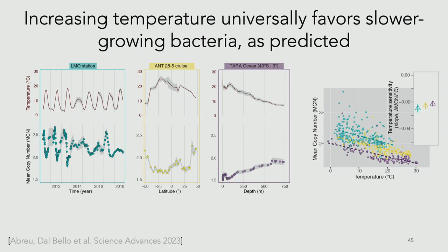Visualizing it another way, mean copy number decreases with temperature, consistent with our previous experiments. The slope of this temperature relationship is remarkably consistent across datasets — almost disturbingly so for real data. The intercepts of these lines are different, though, meaning mean copy number is not just a function of temperature — different environments like the Baltic Sea and open ocean differ in nutrients and other factors.